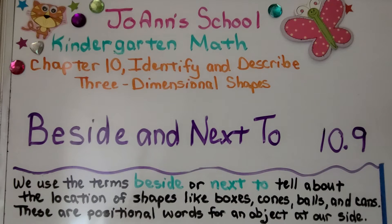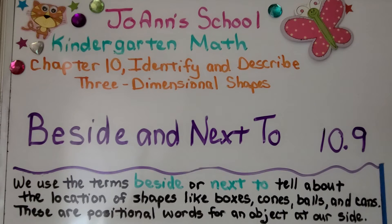Lesson 10.9: Beside and Next To. We use the terms 'beside' or 'next to' to tell about the location of shapes like boxes, cones, balls, and cans. These are positional words for an object at our side.